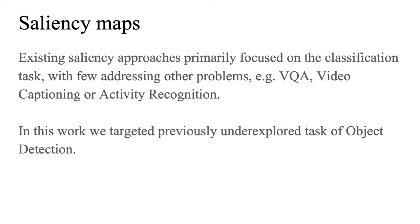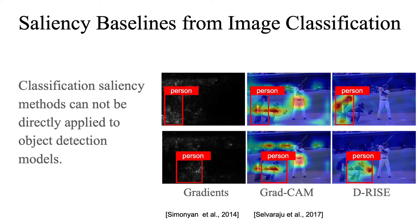In this work, we targeted the previously underexplored task of object detection. If applied directly to detection models, classification saliency methods fail to produce high-quality explanations. In this figure, you can see how the gradients and GradCAM methods highlight multiple objects in the image when trying to explain a single bounding box.